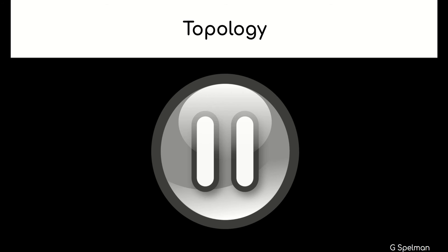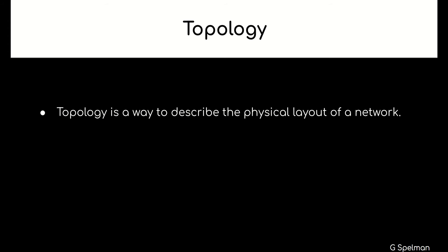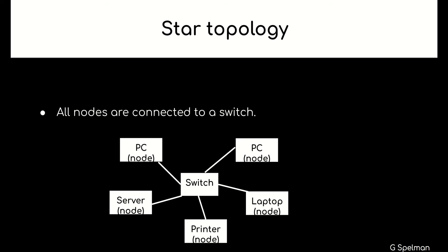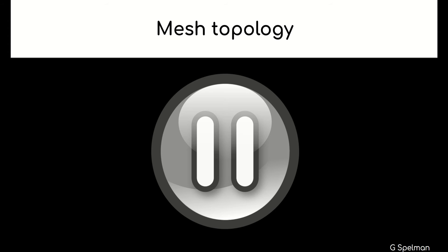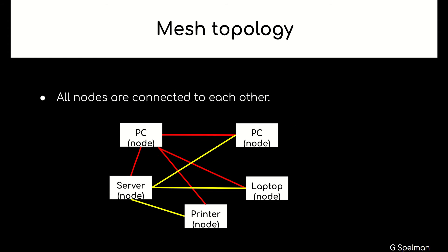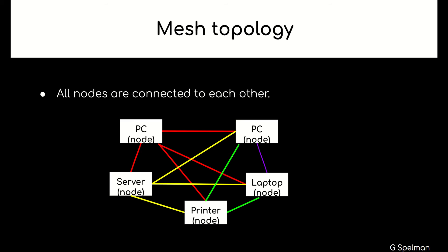Topology. Topology is a way to describe the physical layout of a network. Star topology: all nodes are connected to a switch. Mesh topology: all nodes are connected to each other.